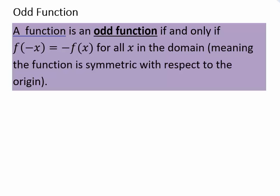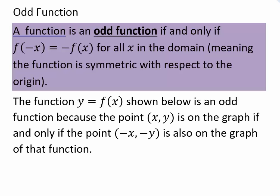We will call a function an odd function if and only if f of negative x equals negative f of x. That means that the function is symmetric with respect to the origin. Or if x, y is a coordinate on the graph, then negative x, negative y is on the graph, which means that if you replace x with negative x, the y coordinates have different signs. That's what that means.